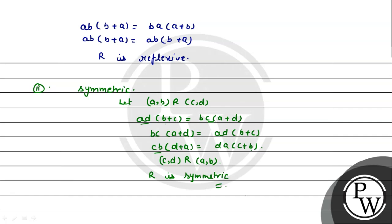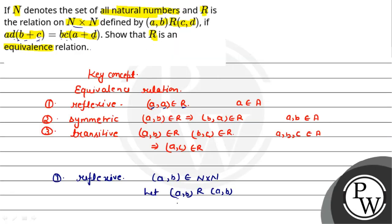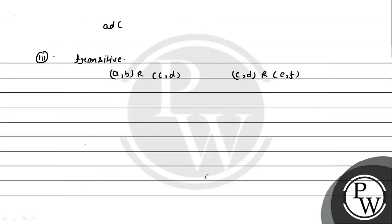Now we need to prove transitive. For transitive, we write: (A,B) related to (C,D) and (C,D) related to (E,F), and we need to show (A,B) related to (E,F). From the given relation, for (A,B) R (C,D): AD(B+C) = BC(A+D). And for (C,D) R (E,F), replacing A,B with C,D and C,D with E,F: CF(D+E) = DE(C+F).